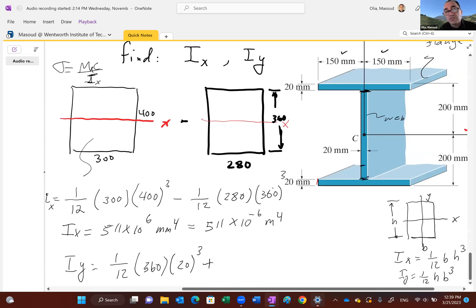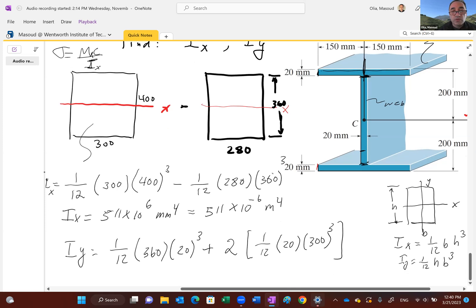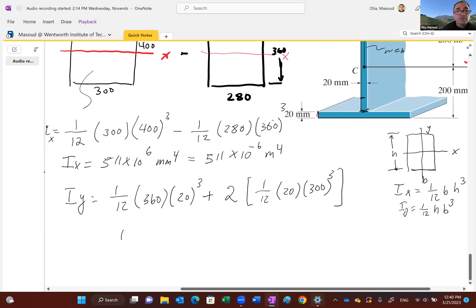You have two flanges identical, so I can double that. 1/12 what? See this y-axis? The b becomes 20 and the h becomes what? 300, right? So 20, 300. Remember, two exactly the same flanges, 1/12 hb³ or bh³, whatever you want to call it. So it's very easy to find I sub y. And look at the numbers, guys.